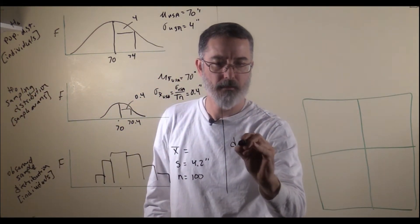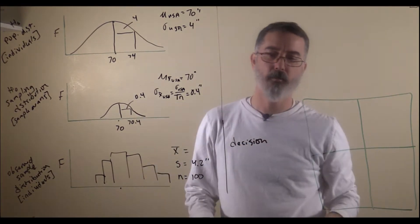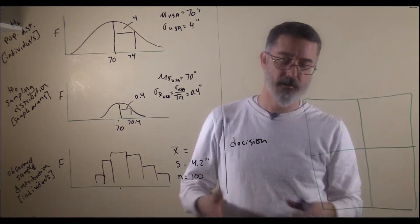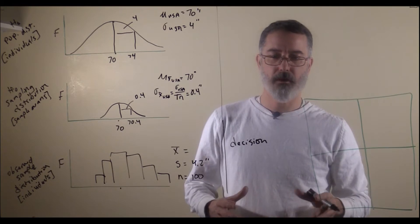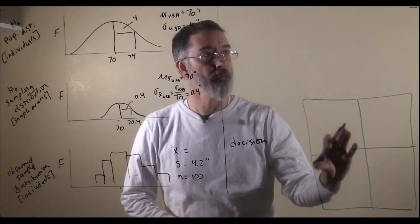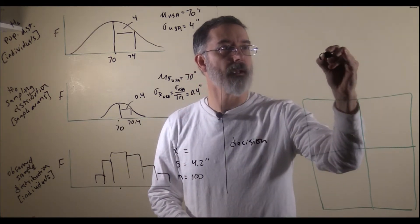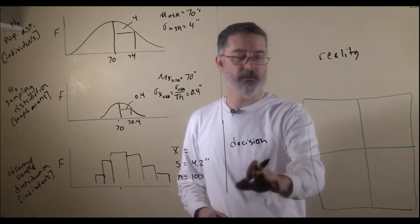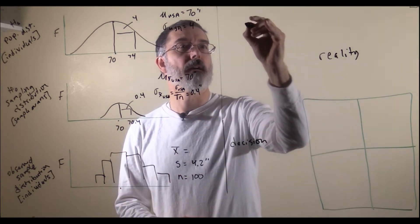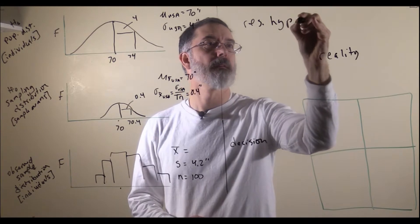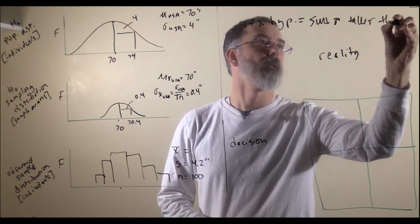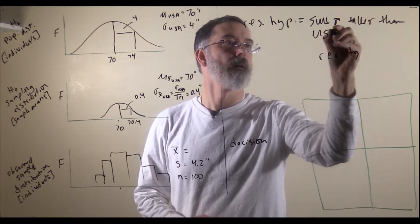On this side is the decision we make after we look at our data, run our analyses, and compare our p-value to alpha, or compare our critical value to our test statistic, and decide whether or not to reject the null hypothesis. Up here is reality. What we are hoping is that our decision matches reality. Let's say our research hypothesis is that SUU men are taller than American men.